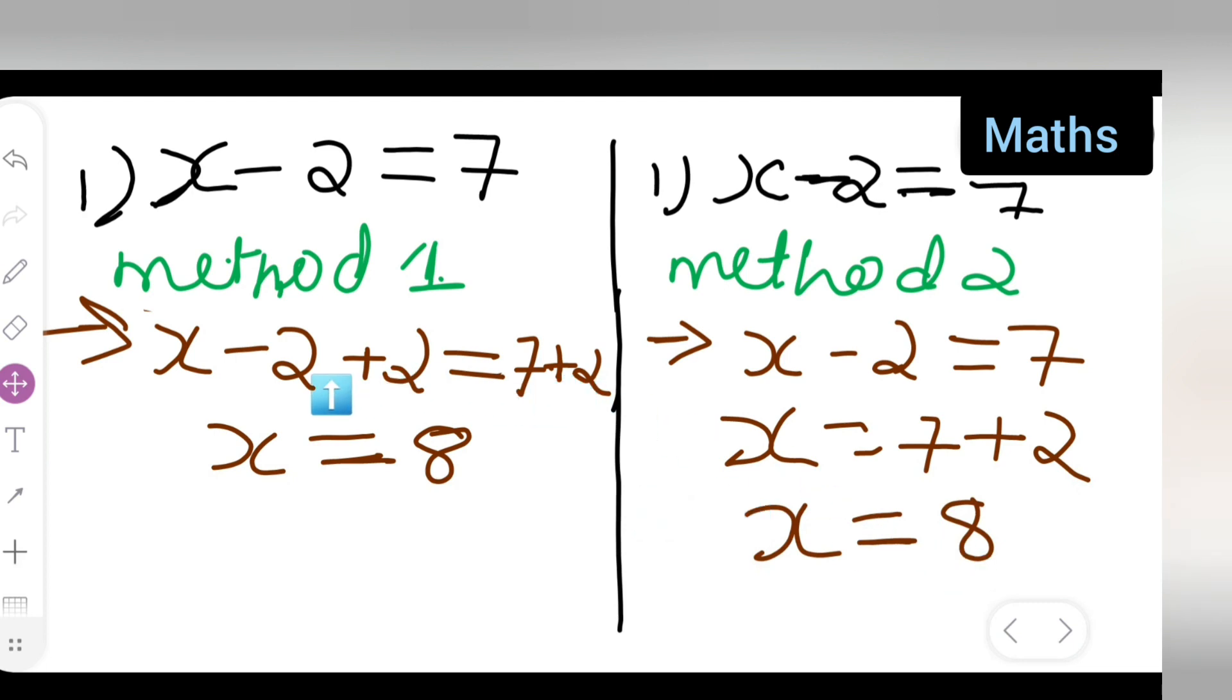Here you all are adding plus 2 on both the sides. So, that this 2 to get cancelled and you should get x is equal to 8. So, whichever method you find easy, comfortable you all can use it. Next is. The answer is not 8. The answer is 9. You all can just write down the answer is 9. 7 plus 2 is 9. Right.